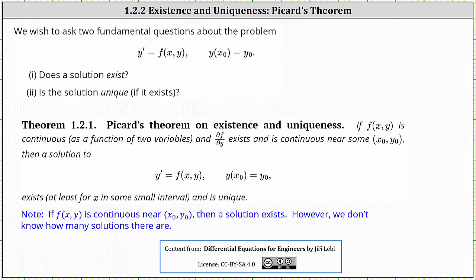Welcome to a lesson on the existence and uniqueness of an initial value problem in the form of y prime equals f of x comma y with initial condition y of x sub zero equals y sub zero. We want to ask two fundamental questions: number one, does a solution exist? And number two, is the solution unique if it exists? To help us answer these questions, we can use Picard's theorem on existence and uniqueness, which states if f of x comma y is continuous as a function of two variables and the partial of f with respect to y exists and is continuous near the point x sub zero comma y sub zero given by the initial condition, then a solution to the initial value problem exists at least for x in some small interval and is unique.